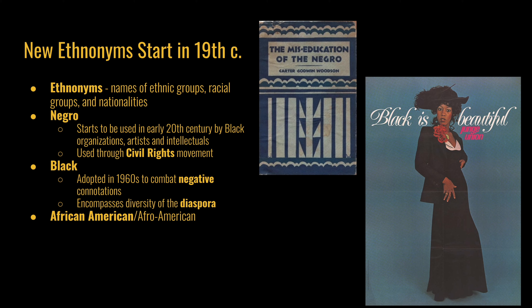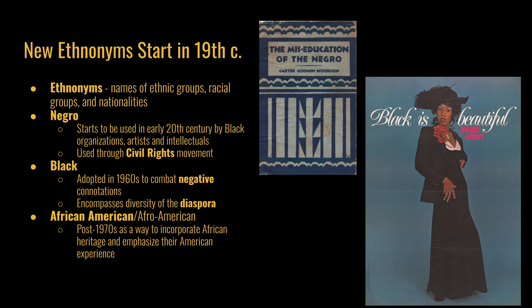After the 1970s, the term African American started to be used as a way to incorporate African heritage and emphasize the American experience. People wanted to maintain both identities, and it became the most commonly used term. African American and black are both acceptable ethnonyms today. Terms like colored and Negro stopped being used due to their association with periods of intense racial discrimination, such as the Jim Crow era, and their negative historical connotations. After the civil rights movement, there was a promotion of the term black to signify pride and empowerment, rejecting older terms linked to oppression.